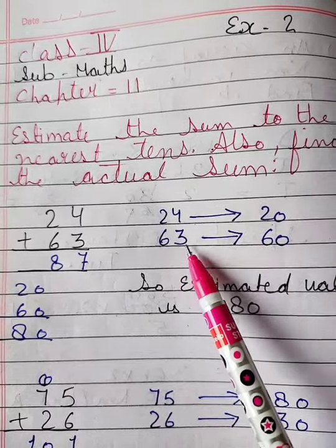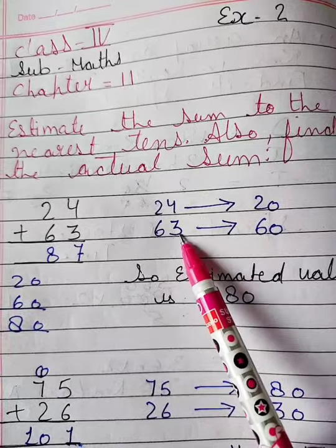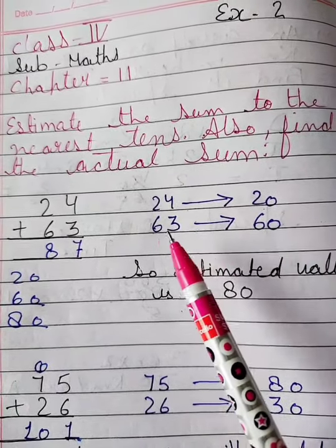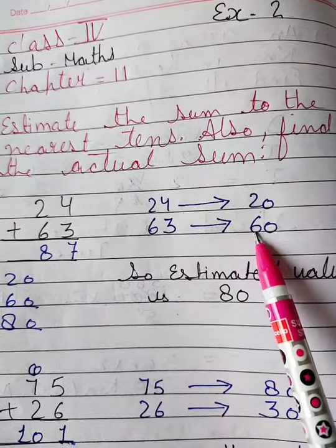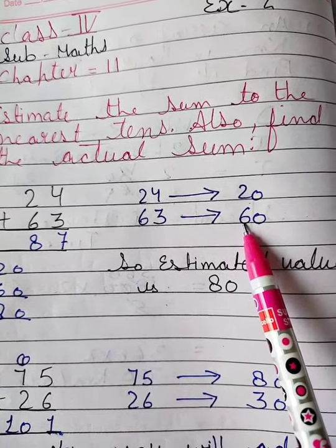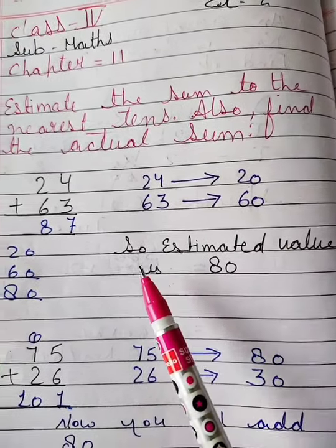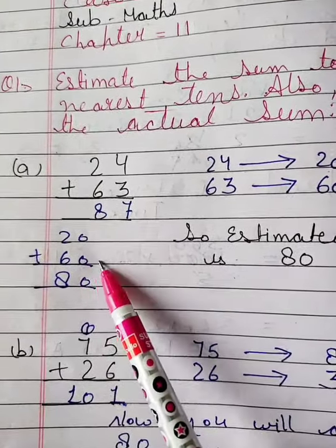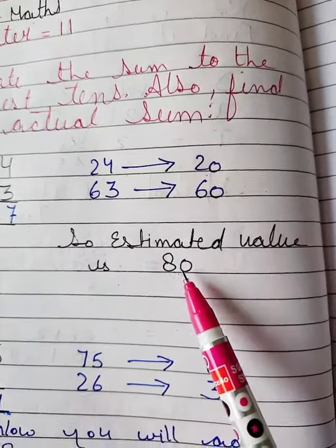So 20 and 63. Here, we will write 60 because in place of ones digit, we will write 0 and here is tens digit 6. And we are not changing tens digit, so 6 is as it is. Students, here is 20 and here is 60. So now you will add 20 and 60. Here is 80. So your estimated value is 80.